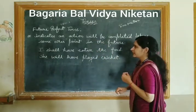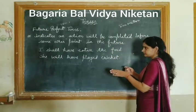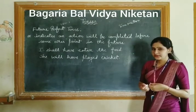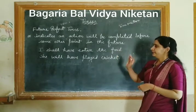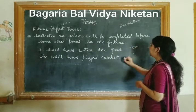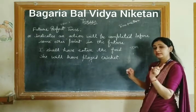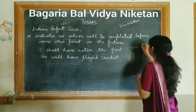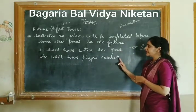Future perfect continuous also deals with the same situation — we talk about an action that will be fully completed in the future. For example: 'I shall have eaten the food' — meaning I will have had my meal. The marker 'chuka/chuki hoga' is used for future perfect, as opposed to present perfect or past perfect. For example: 'She will have played cricket.'